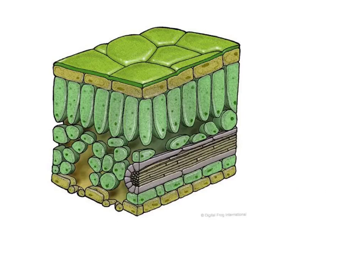Here is the cross-section. You can see that nowhere in the leaf is very far from the outside because it's so flat. When carbon dioxide goes in, it really doesn't have very far to travel to get to the palisade cells where it's needed. Equally, oxygen doesn't have very far to travel out. So the flattened shape gives a bigger surface area but also means there's not very far for the gases to diffuse.